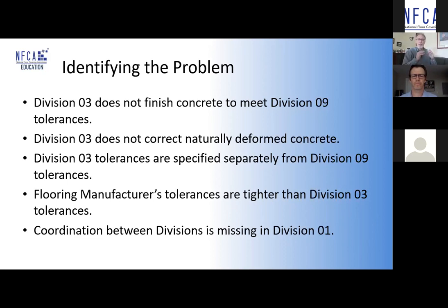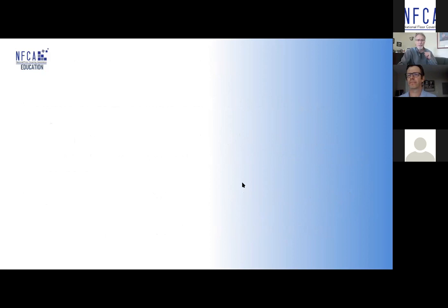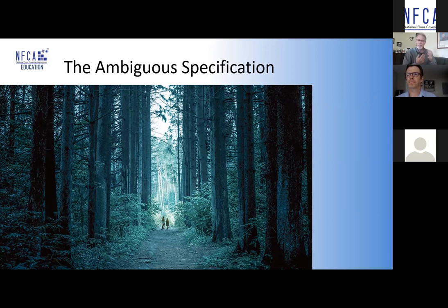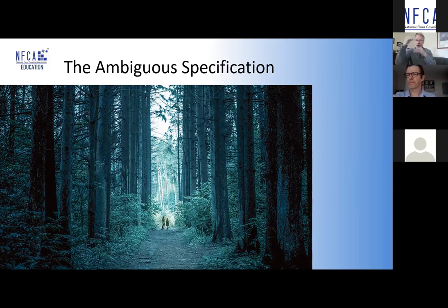This comes down to coordination — we need to find a way to coordinate Division Three and Division Nine. The front end document, in particular Division One, is the rules of the game — that's where the action happens. What we've been doing is tightening up concrete tolerances to higher and higher performances and still failing to bridge the gap. Mike looked at me and said, 'What are you going to do about this?' — very emphatic about me specifically.